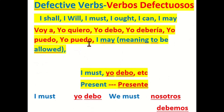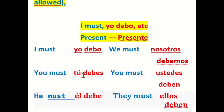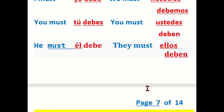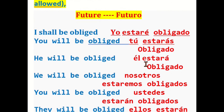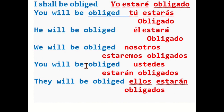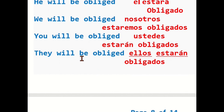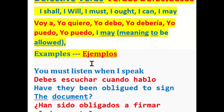Now we cover the verb must — yo debo. The present: I must — yo debo; you must — tú debes; he must — él debe; we must — nosotros debemos; you must — ustedes deben; they must — ellos deben. And the future of this verb: I will be obliged — yo estaré obligado; you will be obliged — tú estarás obligado; he will be obliged — él estará obligado; we will be obliged — nosotros estaremos obligados; you will be obliged — ustedes estarán obligados; they will be obliged — ellos estarán obligados.